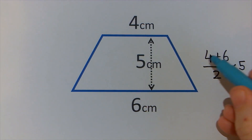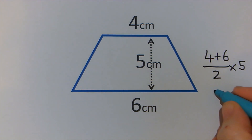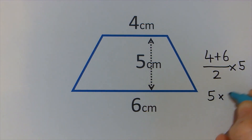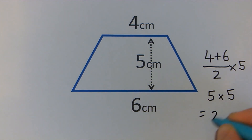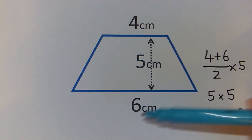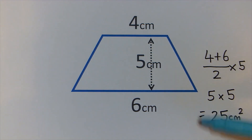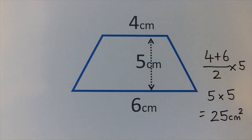So the sum is 10. 10 divided by 2 is 5. Times the distance between them — 5 times 5 is 25. And we need to use cm squared. So half the sum of the parallel sides times the distance between them — this is how we calculate the area of a trapezium.